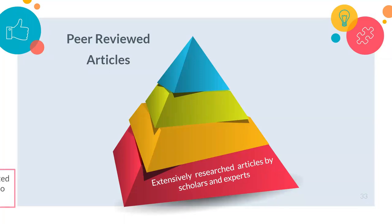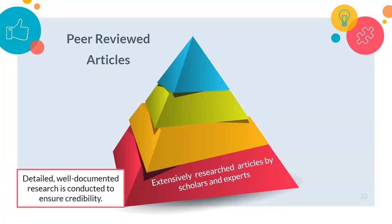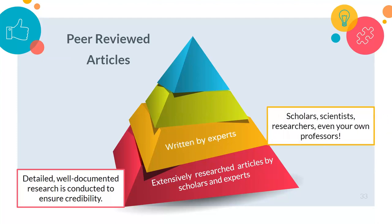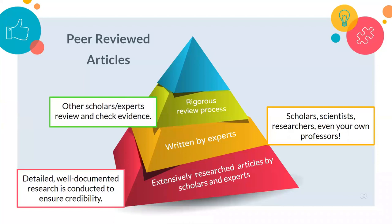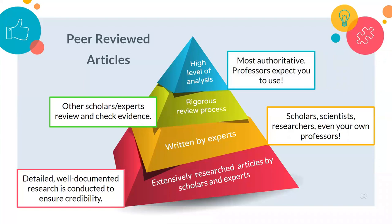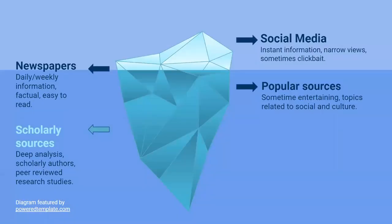Peer-reviewed articles are scholarly works from authors who have done extensive research on a specific topic, and their work has gone through a very rigorous process to ensure its credibility. Unlike popular sources, these peer-reviewed journal articles are written by scholars, scientists, researchers, even your own professors. Before their work is ever published, it goes through that rigorous review where other scholars in the field review it to make sure it's based on solid evidence and not just someone's opinion. Peer-reviewed articles are considered the most authoritative type of information with high levels of analysis, and your instructors will be expecting you to use these to support your own research papers. Scholarly sources are the crown jewel of academic research — you'll be consulting these throughout your college career, so make sure that you know how to identify them.